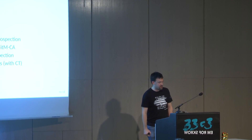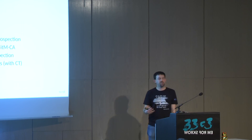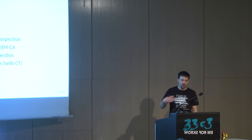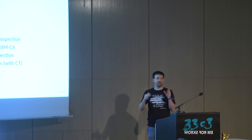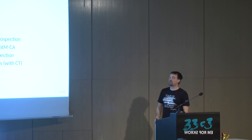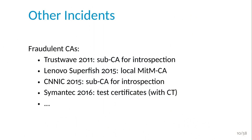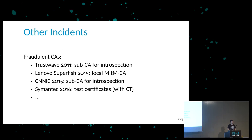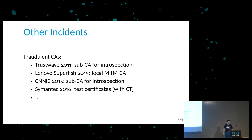Then there was CNNIC in China — they issued a sub-CA for introspection companies. Again, a company wanted to sell appliances to break open HTTPS connections and look into user traffic. And just this year, Symantec was issuing test certificates including for Google.com and Opera.com — things you probably wouldn't want to test. They got caught. The nice thing about this incident is that certificate transparency was already installed, and we'll come back to this in a minute.